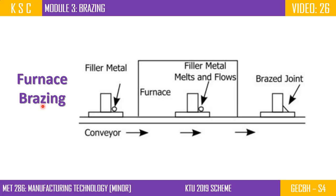This is the furnace bracing. This is the first part of the furnace. There are several units in the furnace. When the furnace is formed, the joint will be fixed and the material will be correct. Once the metal is formed, it will be fixed. I will explain the figure of the furnace bracing.